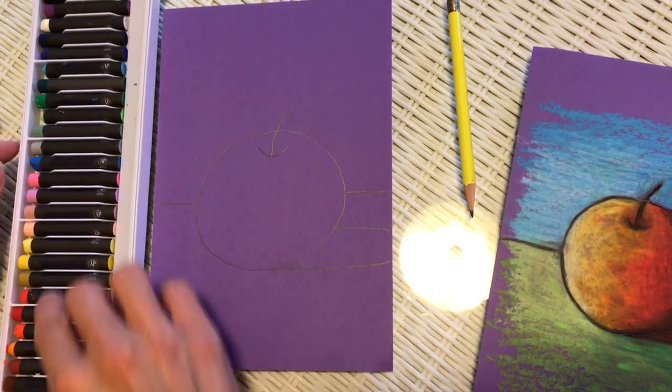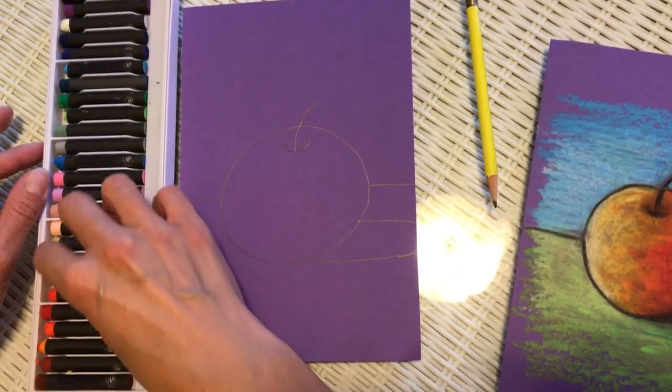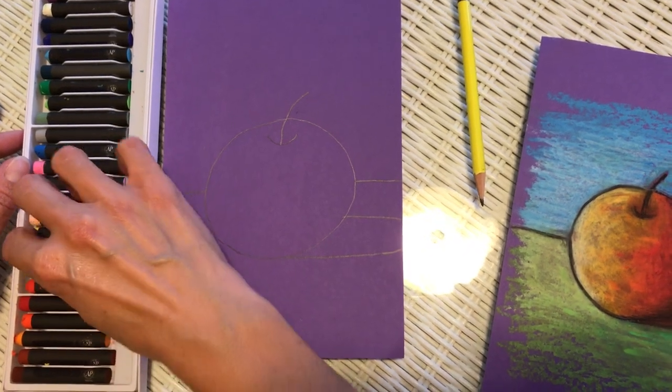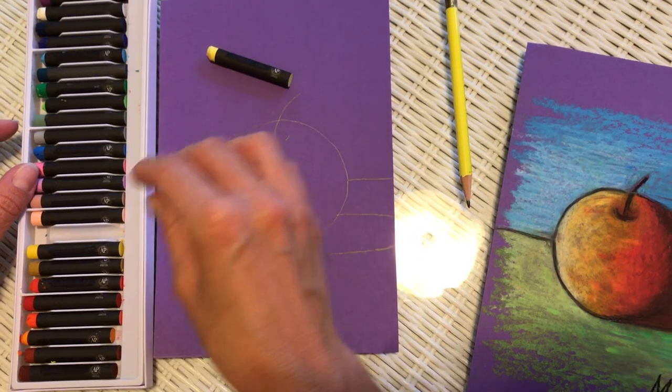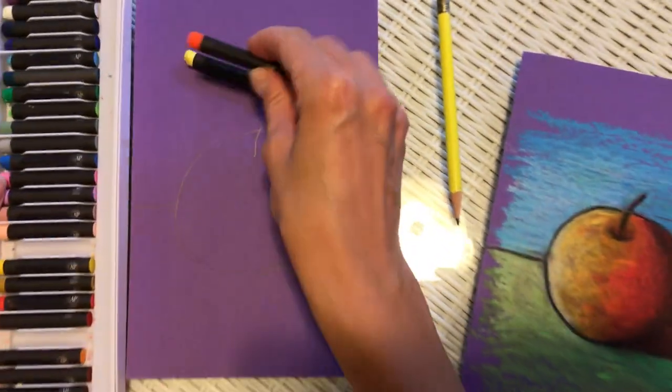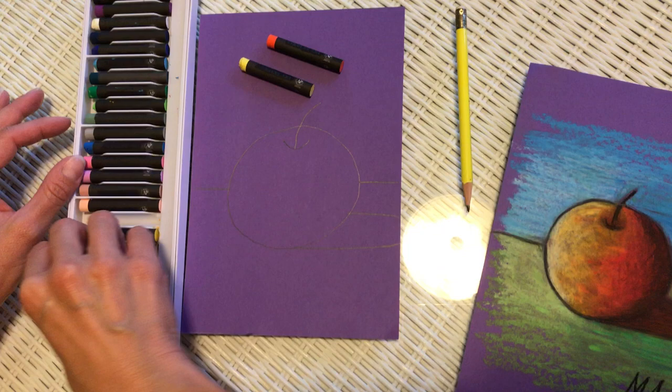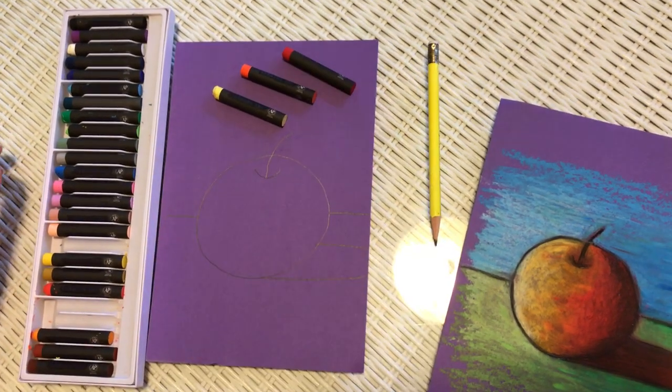For example, let's use some red and oranges or yellow and oranges actually. So we can use a light color, a medium color and a dark color to start with.